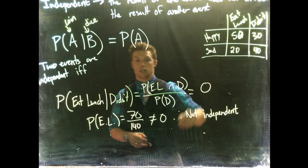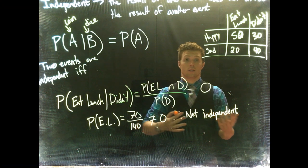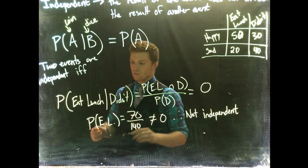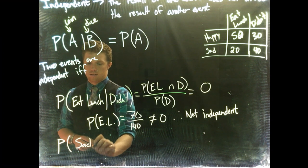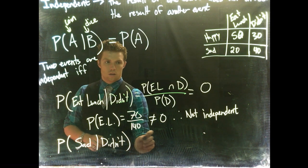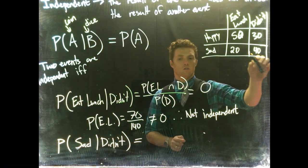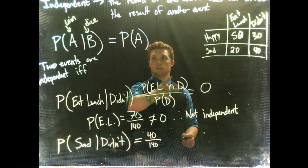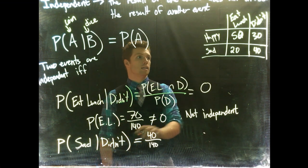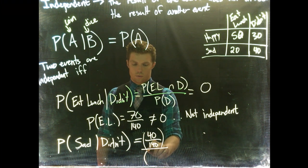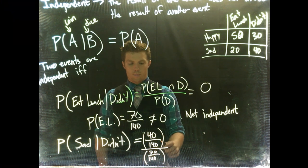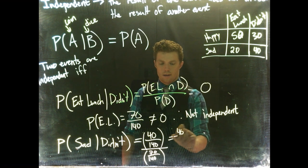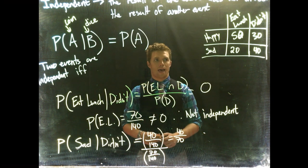We can always go back and use this definition to check. Let's try two non-mutually-exclusive events — sad and didn't eat lunch. Let's do the probability of sad given didn't eat lunch. We need to find the intersection, which is 40 divided by 140, and divide by the probability of didn't, which is 70 divided by 140. Multiplying by the reciprocal, we get 40 divided by 70 as the probability of sad given didn't eat lunch.